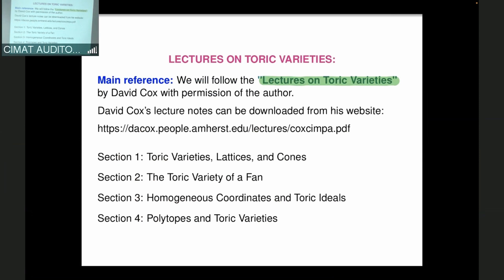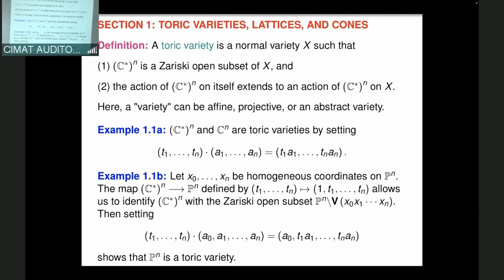Let's start. Section 1 has the title: Toric Varieties, Lattices and Cones. We begin with the definition of a toric variety. A small difference with Professor Cox's notes: nowadays, when one says toric variety, it usually includes the assumption of being normal. In his notes, that assumption is not always there — he uses the word 'normal' additionally, and when he wants that assumption he includes that word.